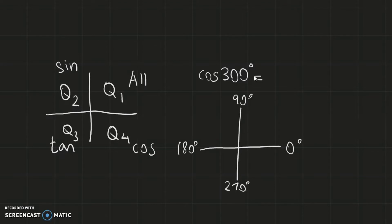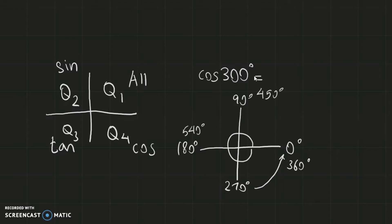The positive x-axis starts at 0 degrees, then 90 degrees, 180 degrees, 270 degrees, and a complete revolution reaches 360 degrees. The cycle can continue — 450, 540, and so on. One complete revolution around the axis forms a circle of 360 degrees split into four quadrants, each constituting 90 degrees. So 300 degrees falls between 270 degrees and 360 degrees.